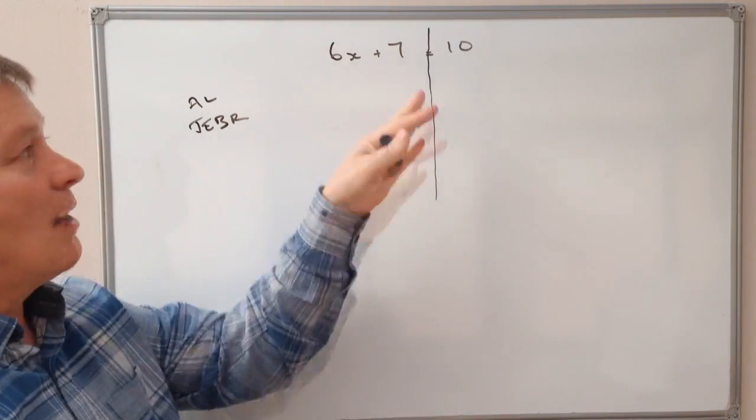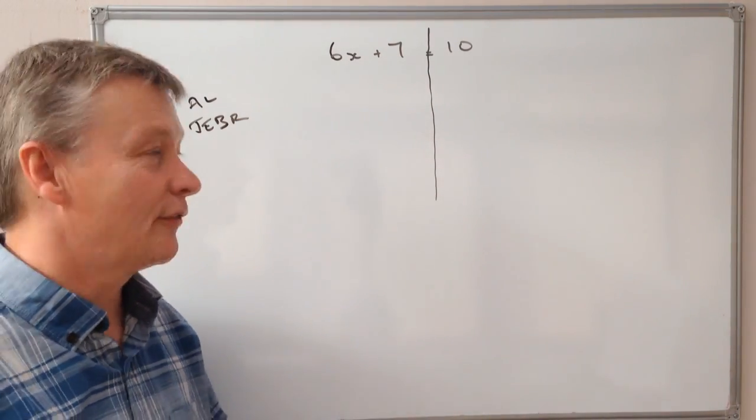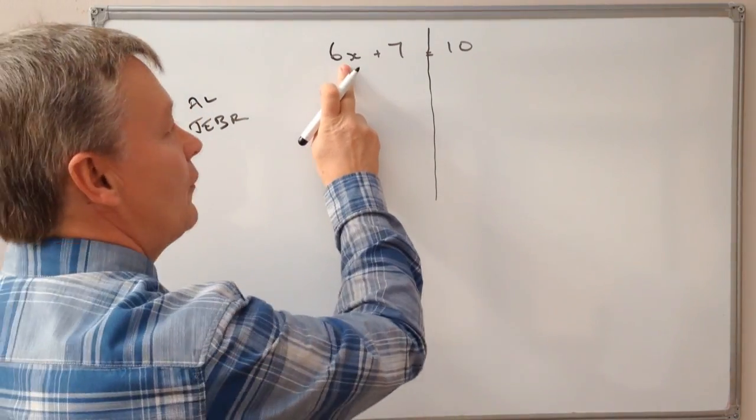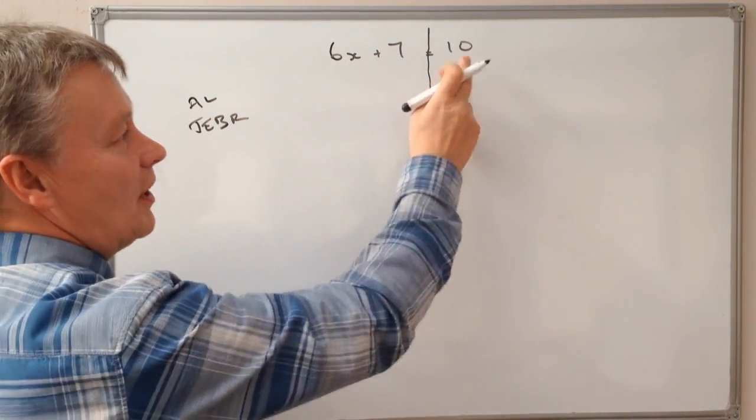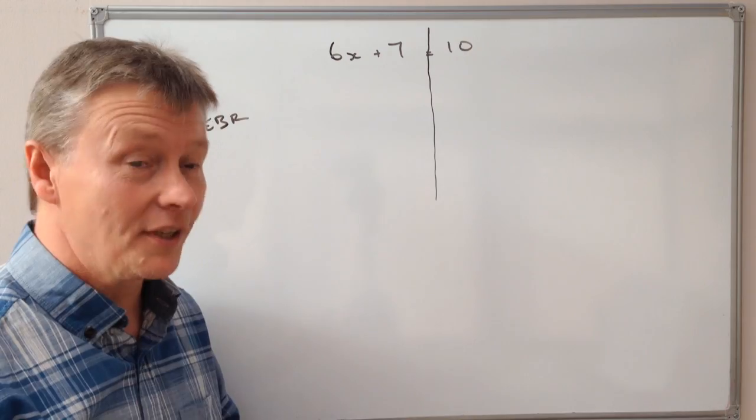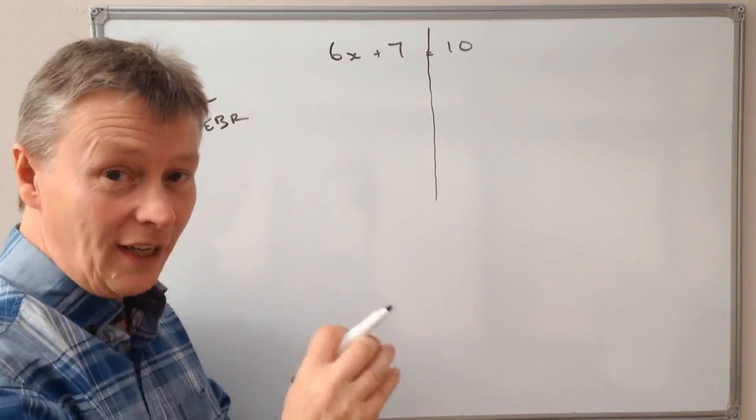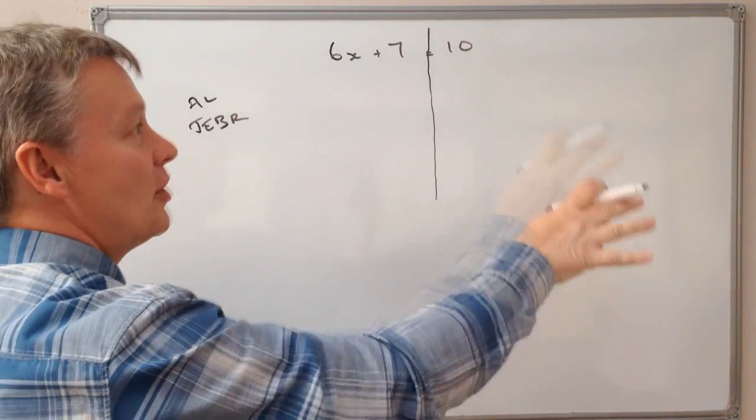So what we're going to do is remain in balance when we're working through these. If we've got x on one side and numbers on the other, in an ideal situation, we want to make sure we've got one value of x on one side, numbers on the other.